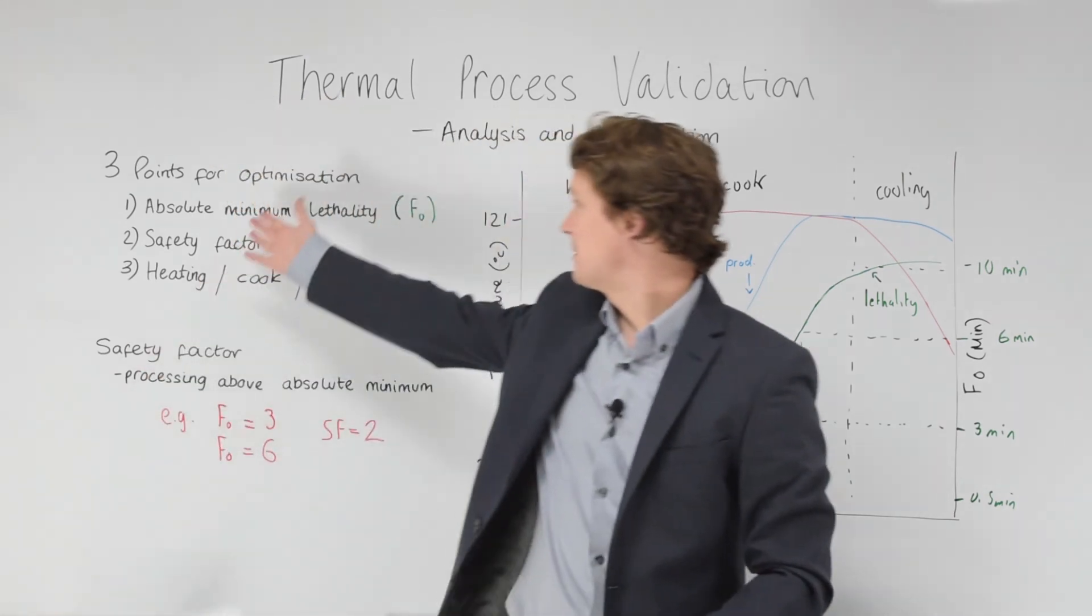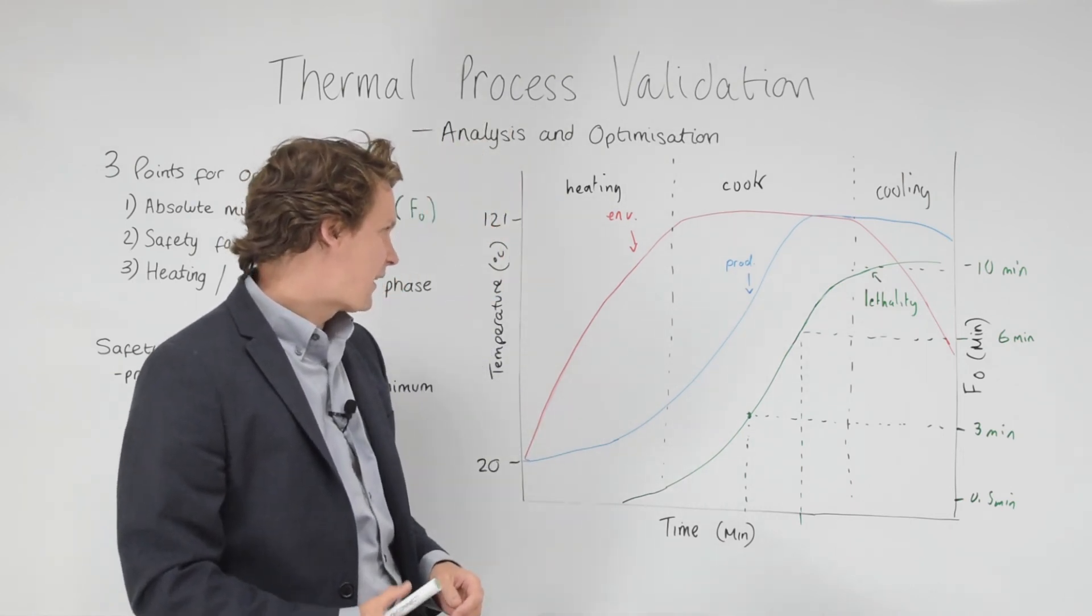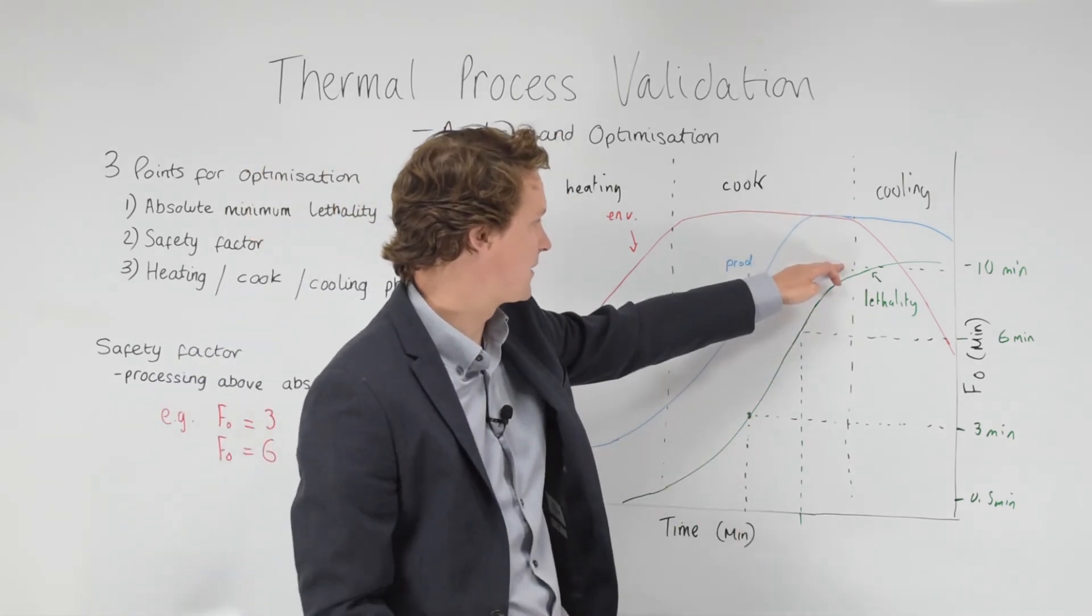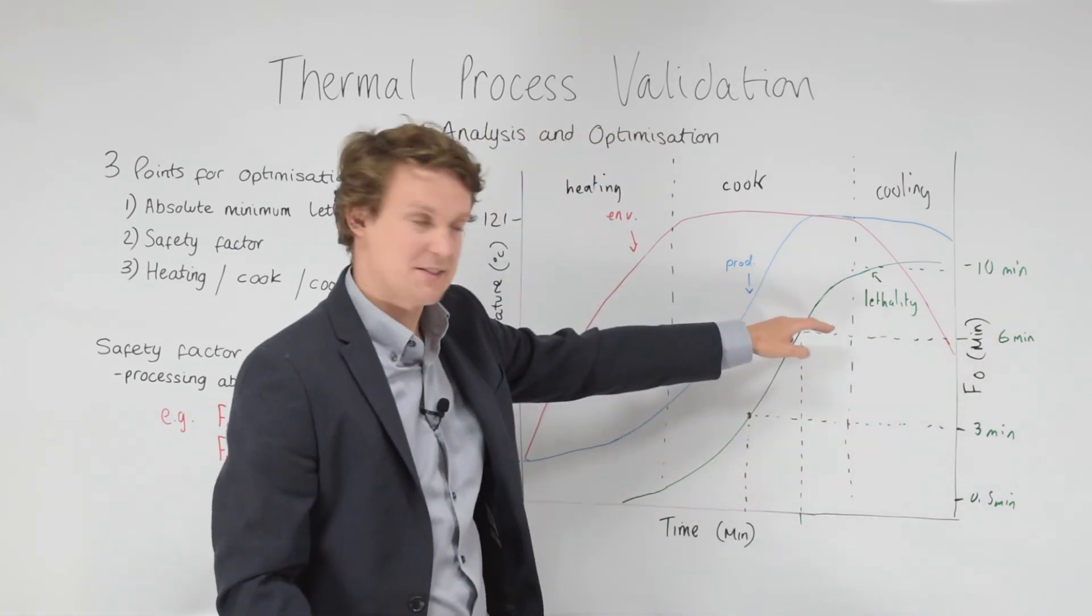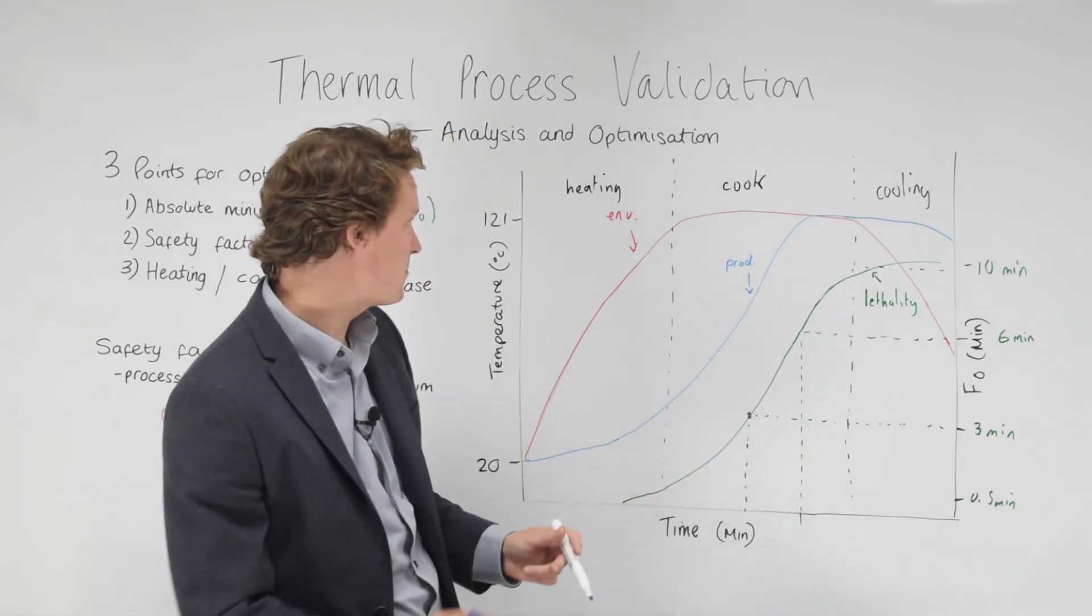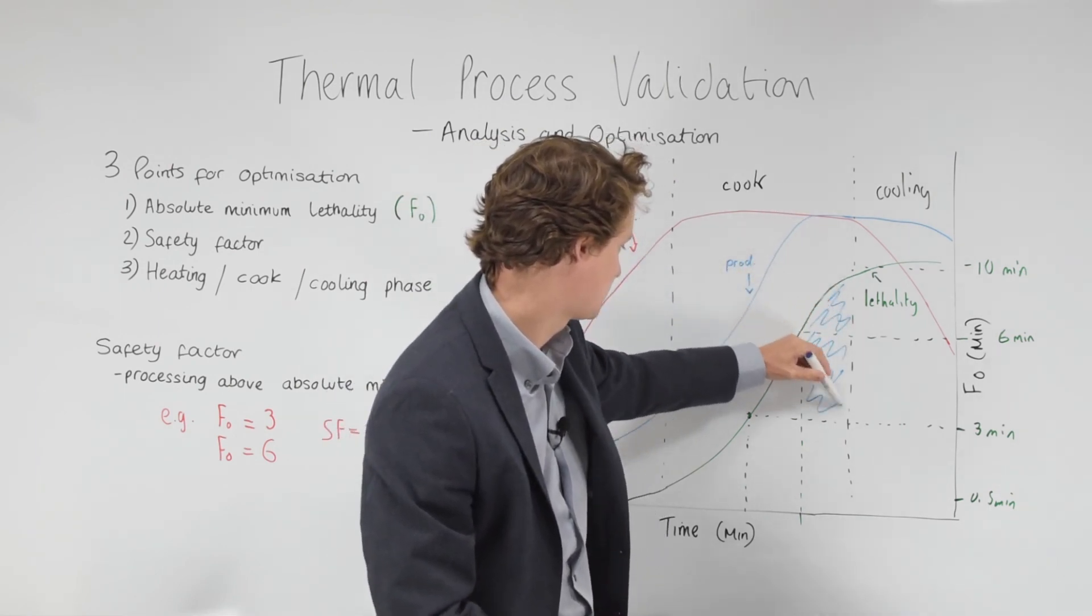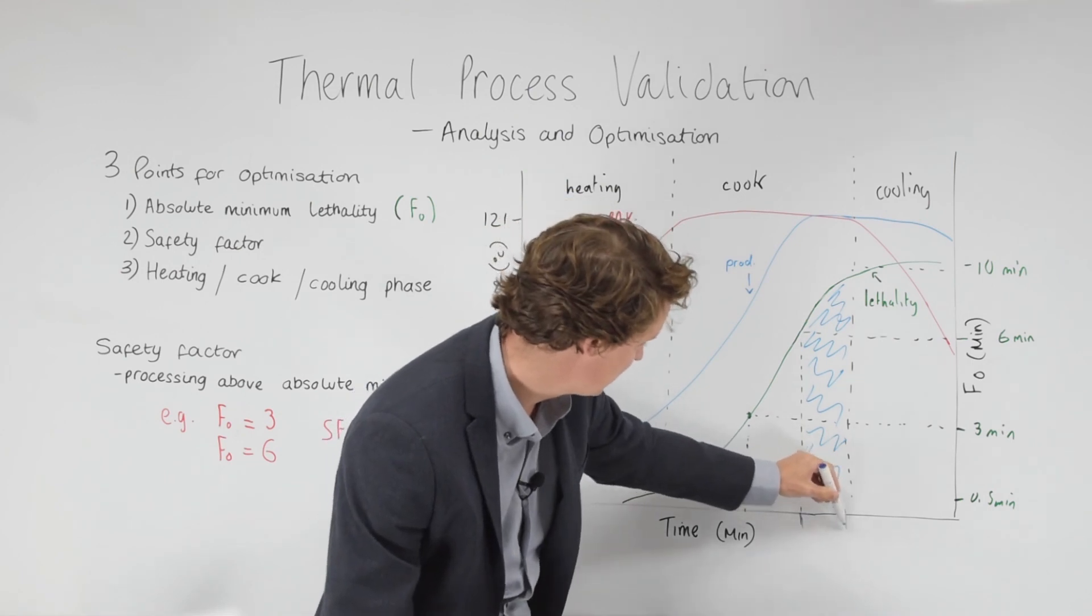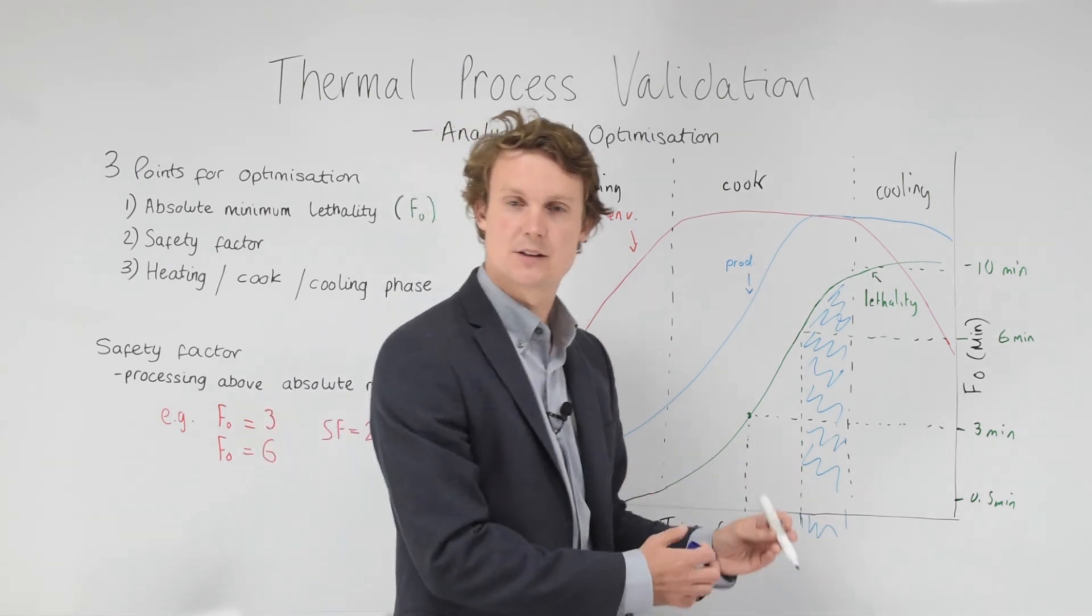So bearing all this in mind, our three points for optimization, and looking at our data, we then need to make a decision, can we optimize? Well, the answer in this example would be yes, because at the end of the cook phase, we've got 10 minutes of lethality accumulated, so it's over our in-house target of 6, which has been established to give us a safety factor of 2, because it's 2 times our minimum, absolute minimum. So yes, in theory, we could take a section of this cook phase out. Because from here to here, this is essentially we're over-processing, we're unnecessarily cooking the product. So we could take that out and optimize our process.